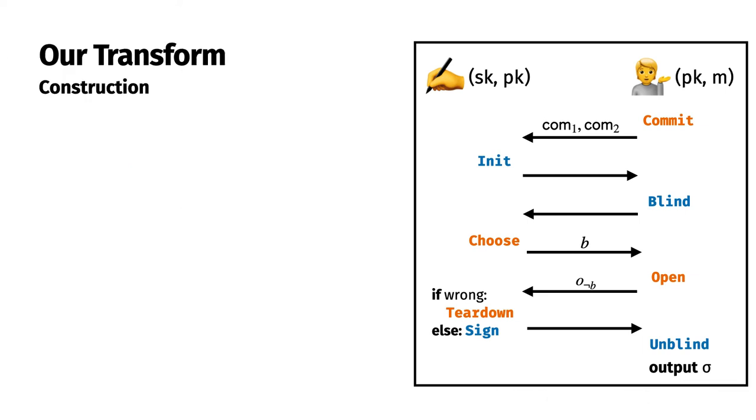We now introduce our transform by starting with Poincheval's. Our scheme doesn't diverge from it too much. The first detail of our transform is that its structure depends on the number of sessions that have already been initiated. In this sense, it is stateful. We denote the session number by n.